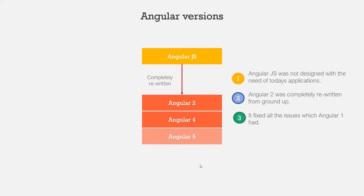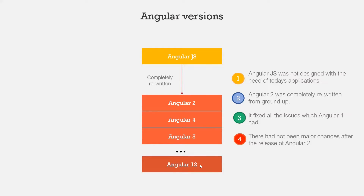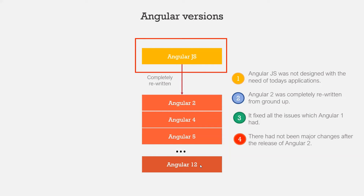Since the release of Angular 2, other versions have been released over the years — Angular 4, 5, 6, 7, and so on. The latest version is Angular 12. Angular 3 was skipped for internal reasons. The Angular team adheres to a versioning scheme where a new version is released every 6 months, and these new versions are not complete rewrites — they have minor changes and a few new features. Angular 2 and later versions are simply referred to as Angular, so now we have two kinds: AngularJS (Angular 1) and Angular (Angular 2 and later).